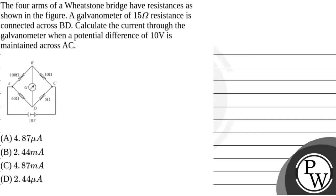Hello, let's read the question. The question says that the four arms of every stone bridge have resistances as shown in the figure. A galvanometer of 15 ohm resistance is connected across BD. Calculate the current through the galvanometer when a potential difference of 10 volt is maintained across AC. So, we will solve this question.